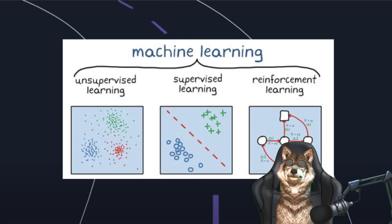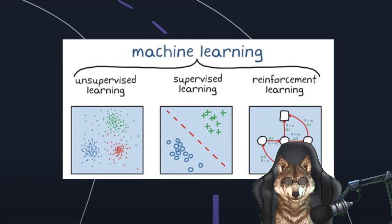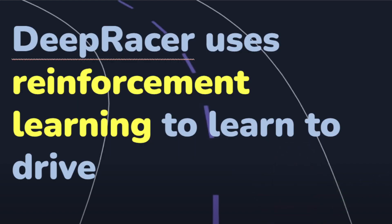There are three types of machine learning: unsupervised learning, supervised, and reinforcement learning. And reinforcement learning is what DeepRacer is all about. DeepRacer uses reinforcement learning to learn to drive, or for the car to basically teach itself how to drive.